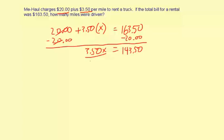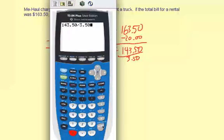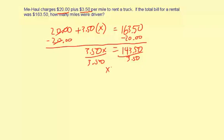To finish solving for X, we divide both sides by 3.50. So 143.50 divided by 3.50 equals 41. X equals 41, and our answer is 41 miles. The question asked how many miles were driven — the answer is 41 miles.